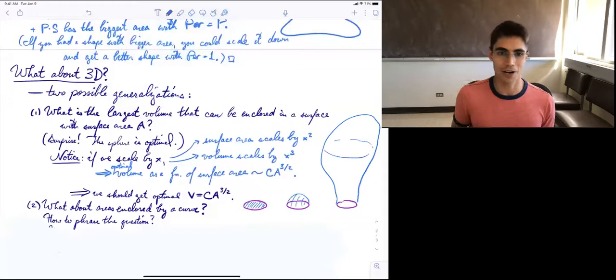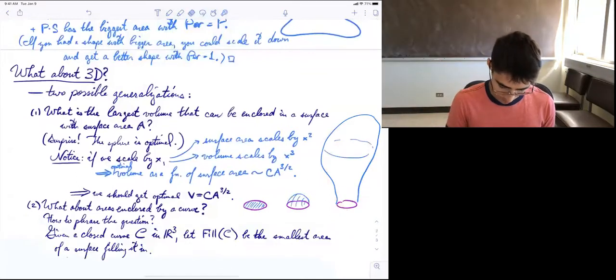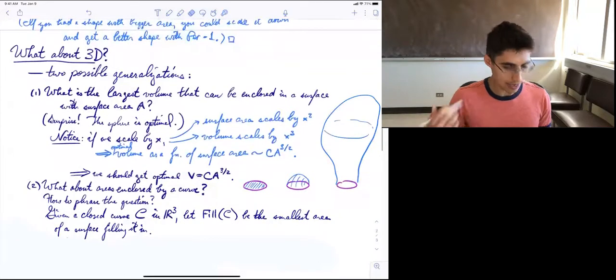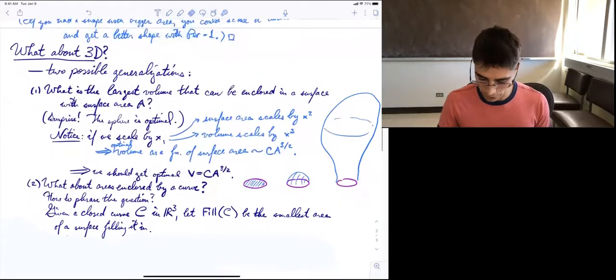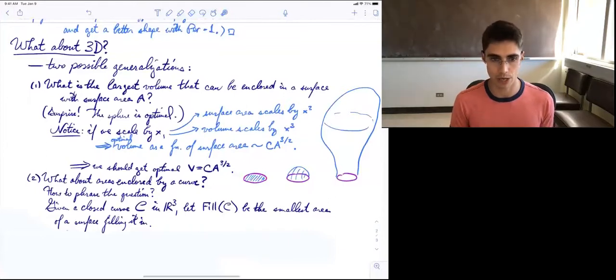And so we can't just say, what is the largest area that can be enclosed in the surface, because the area of this blob can be as big as you want. So that's not a very interesting question. And so here's how we actually want to phrase the question. For a given curve, we actually want to take the smallest area. If we want to say the circle is hard to fill, well, even the smallest area surface that fills it in is pretty big.